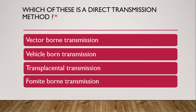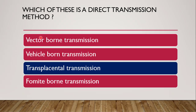Next question: which of these is a direct transmission method? There are two major methods: direct and indirect transmission. Indirect transmission is through a vehicle, vector, or fomite. Direct transmission is through direct contact or transplacental transmission — where the disease is transferred from mother to fetus through the placenta. The correct answer is transplacental transmission.